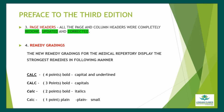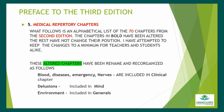What follows is an alphabetical list of the 70 chapters from the second edition. The chapters in bold have been altered; the rest have not changed their position. These altered chapters have been renamed and reorganized as follows: Blood, Diseases, Emergency, and Nerves are included in the Clinical chapter. Delusion is included in Mind. Environment is included in Generals.